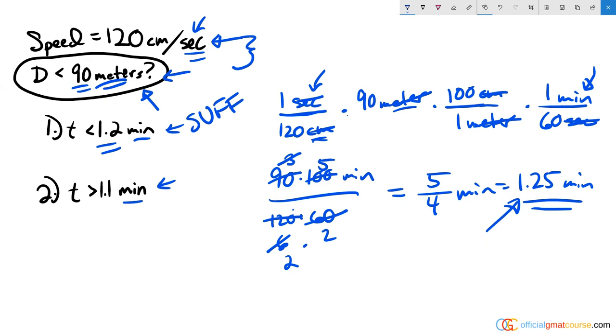Statement two, on the other hand, tells me I drove for longer than 1.1 minutes. I could have driven for 1.11 minutes. I could have driven for 1.5 minutes. And this would answer the question in two different ways. So this is insufficient.